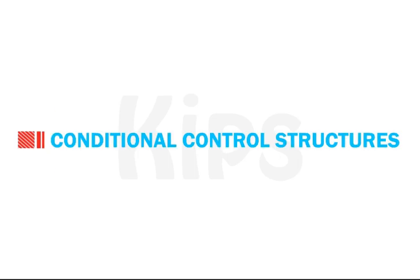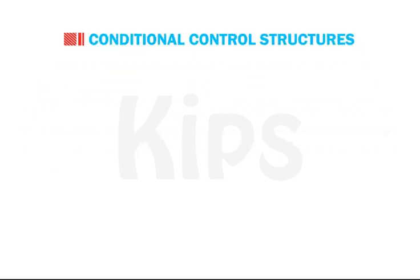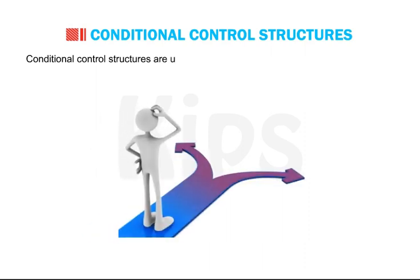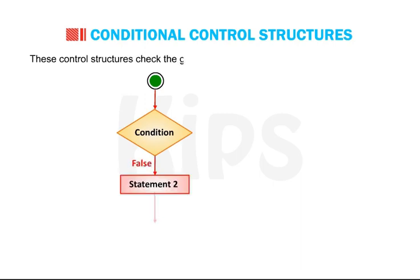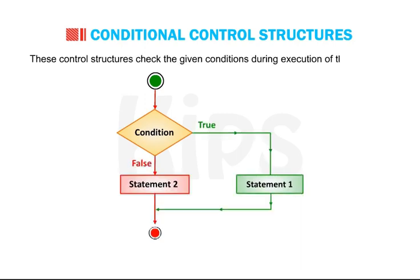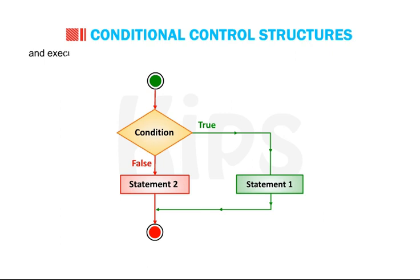Let us discuss Conditional Control Structures. Conditional Control Structures are used for decision making based on some conditions. These control structures check the given conditions during execution of the program and execute the programming statements according to the result obtained from such given conditions.